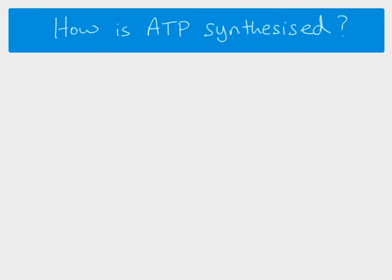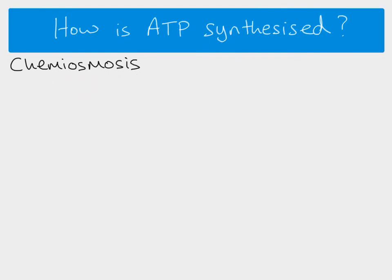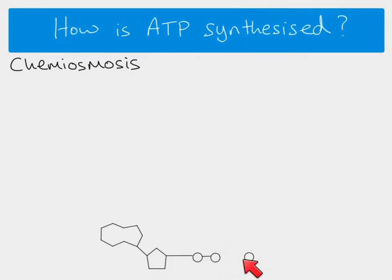The second way that ATP can be synthesized is called chemiosmosis. Osmosis normally refers to the movement of water across a semi-permeable membrane down a concentration gradient. Chemiosmosis uses some of those ideas, but instead of water, we're talking about the movement of hydrogen ions. In chemiosmosis, we again have ADP and we have to add inorganic phosphate — but this time the phosphate is free in the cell, not from a donor molecule — and we need energy to join these two together to make that bond. The energy comes from the movement of hydrogen ions.